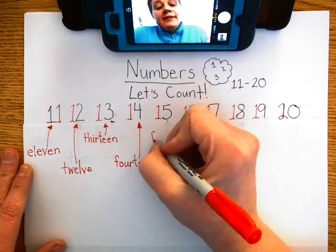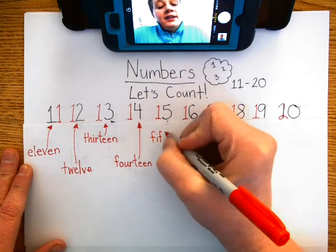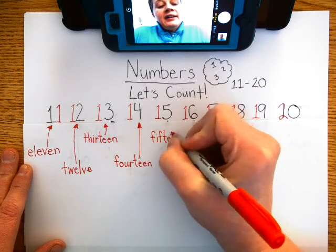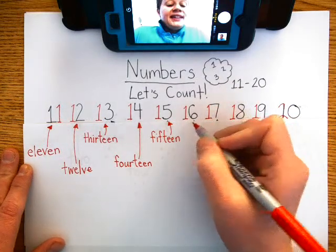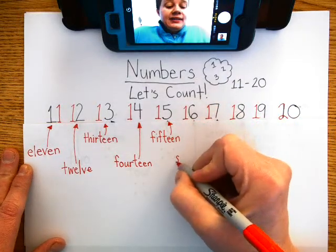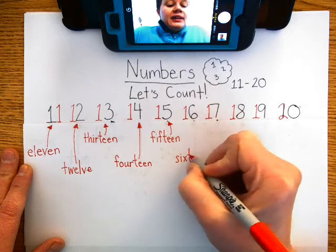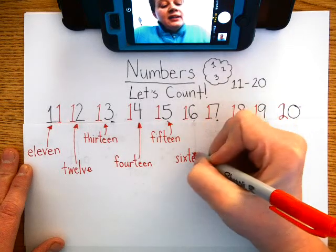Then we have 15, F, I, F, T, E, E, N. Next is 16, S, I, X, T, E, E, N, 16.